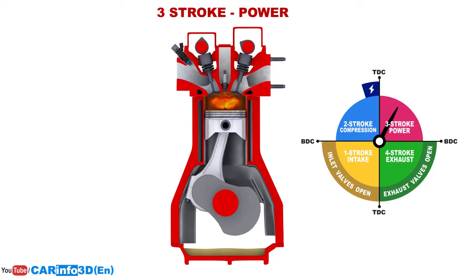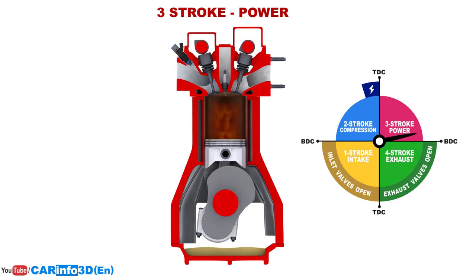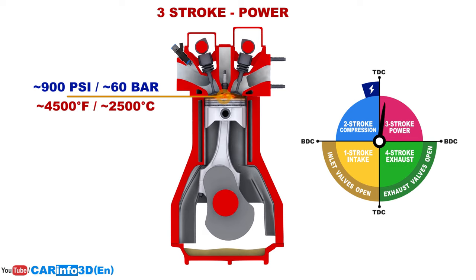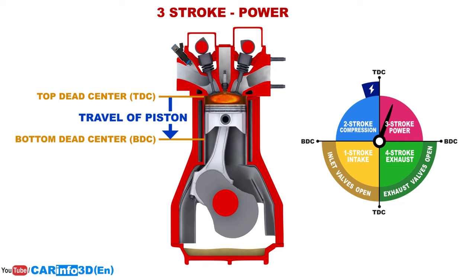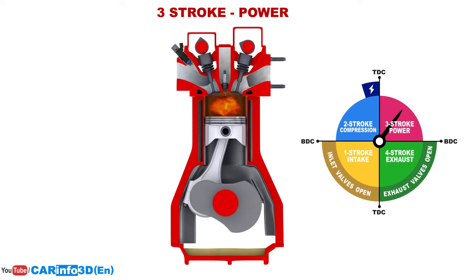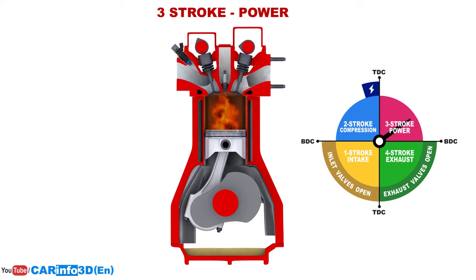The third stroke is the power stroke — the climax of combustion. The combustion process generates a large amount of heat, and the cylinder pressure can reach up to 900 psi. The pressure of expanding gases causes the piston to move from top dead center to bottom dead center, turning the crankshaft via the connecting rod and thereby converting thermal energy into mechanical work. The stroke completes when the piston reaches bottom dead center.